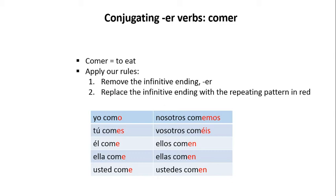Starting at the upper left, first person singular: yo como, tú comes, él come, ella come, usted come, nosotros comemos, vosotros coméis, ellos comen, ellas comen, ustedes comen.